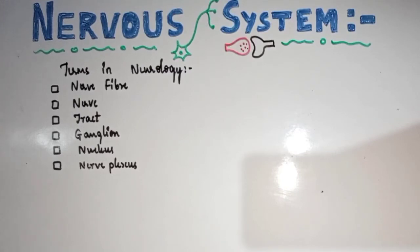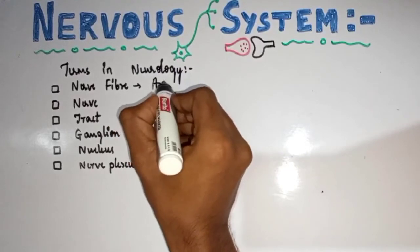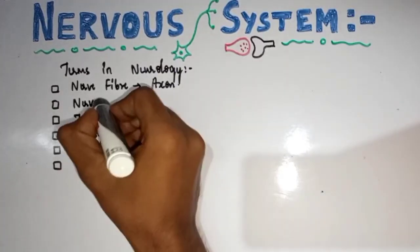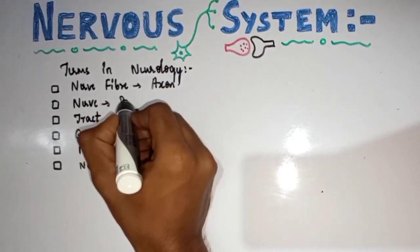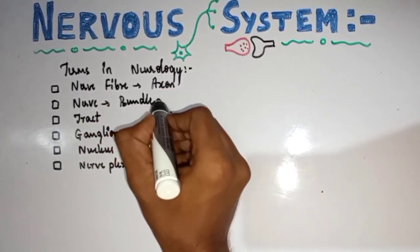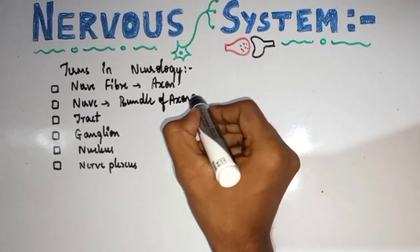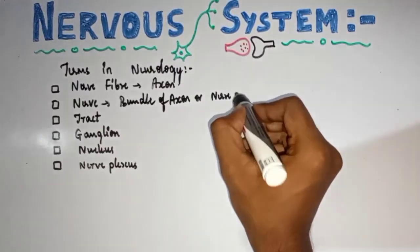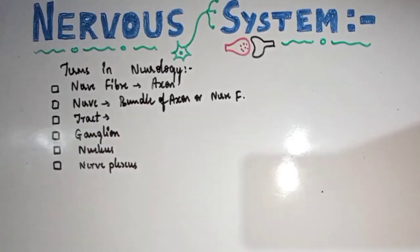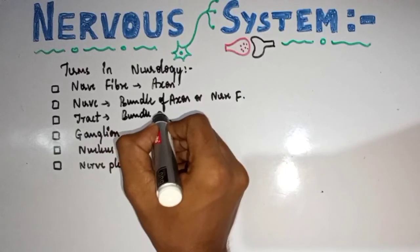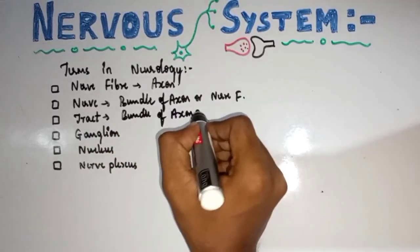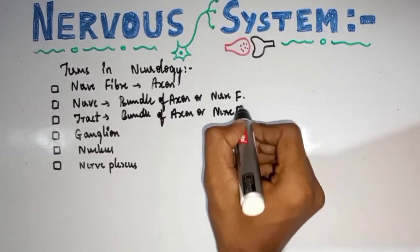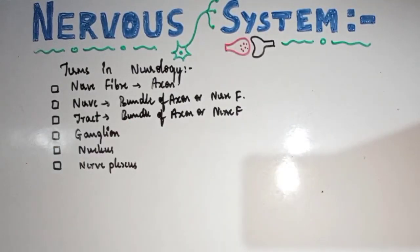Finally, some important terminologies used in neurology: a nerve fiber is nothing but an axon. A nerve is a bundle of axons present in the PNS. A tract is also a bundle of axons, but present inside the CNS. That is the only difference between a nerve and a tract.